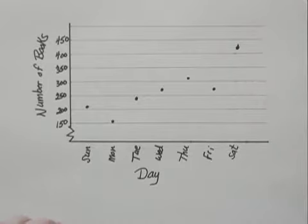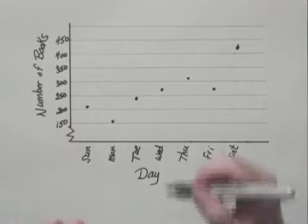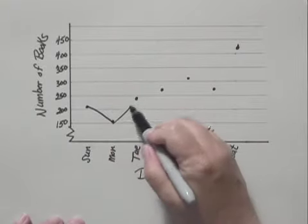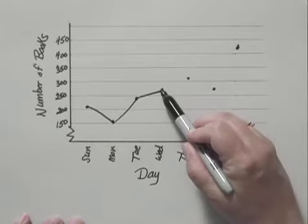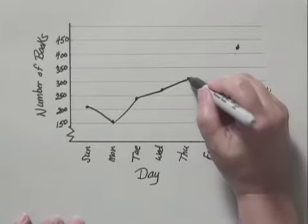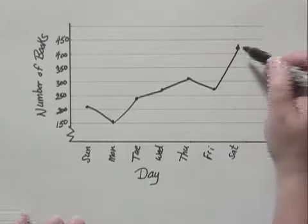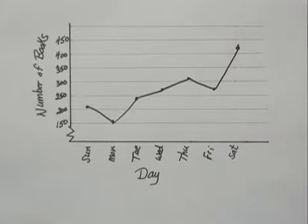Now to complete the line graph, I draw line segments that connect the adjacent points. I try to draw as straight a line as I can between the two points that are adjacent to each other. And this is a line graph that represents the data.